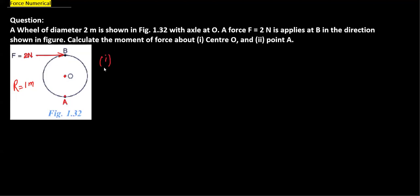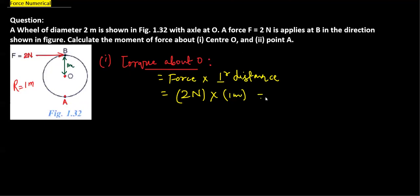For part A, we have to take torque about O. The formula is force into perpendicular distance. The force is 2N and the perpendicular distance is the radius which is 1 meter, so you have 2 newton meter, the torque value will come.